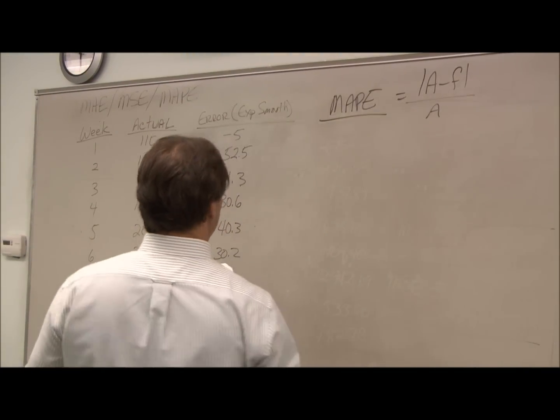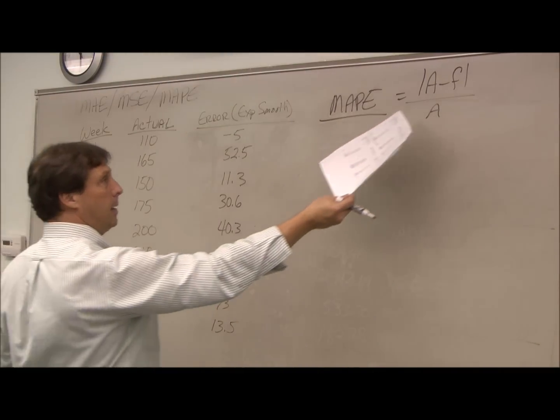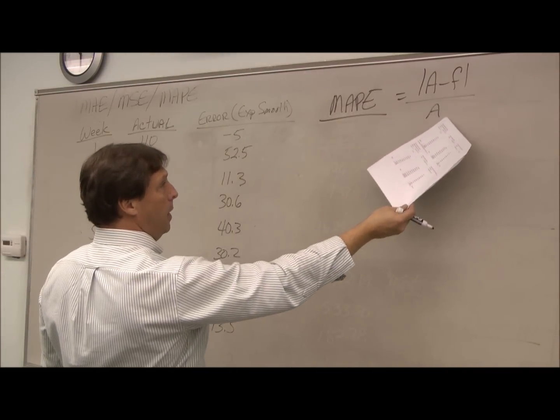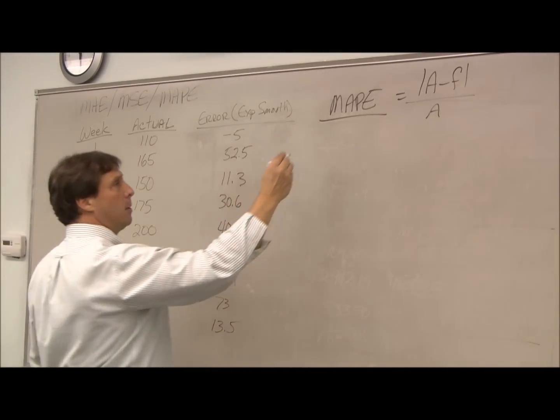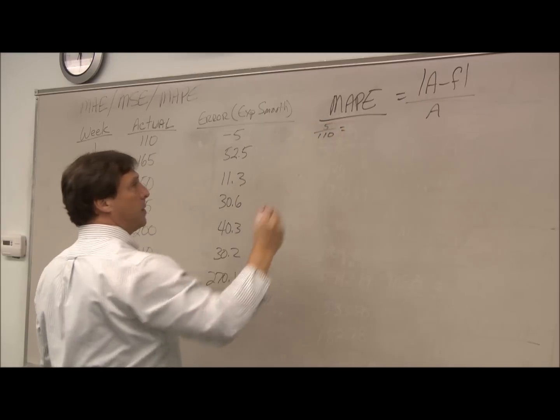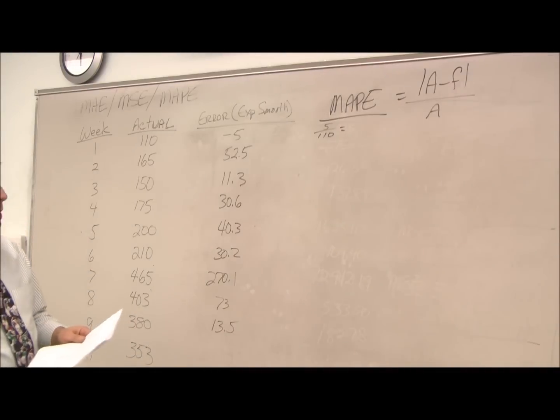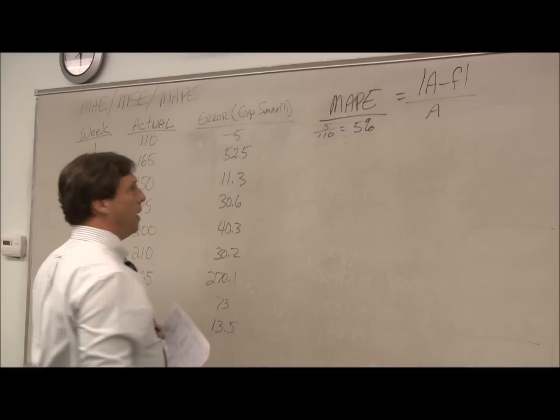To calculate our MAPE, our last forecasting method, we take the absolute error and divide it by the actual. So my absolute here is 5, my actual is 110, and rounding off, that's about a 5% error.